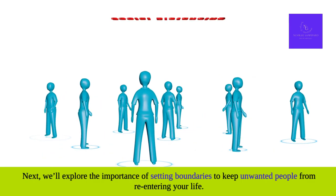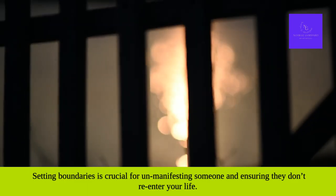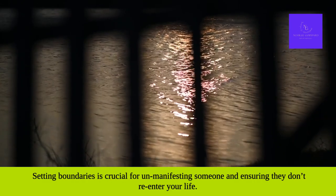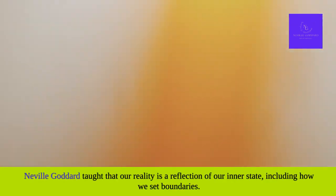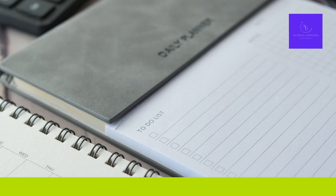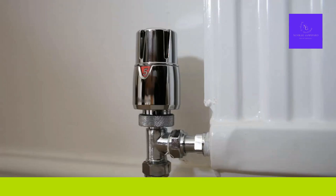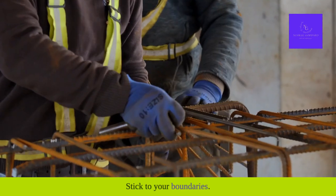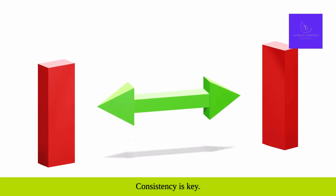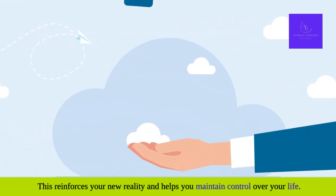Next, we'll explore the importance of setting boundaries to keep unwanted people from re-entering your life. Setting boundaries is crucial for unmanifesting someone and ensuring they don't re-enter your life. Neville Goddard taught that our reality is a reflection of our inner state, including how we set boundaries. Start by clearly defining your boundaries — what behaviors are unacceptable, and what kind of treatment do you deserve? Write them down to solidify your intentions. Communicate your boundaries assertively and confidently. Setting boundaries is a form of self-respect — it's about protecting your energy. Stick to your boundaries; if the specific person tries to cross them, stand firm.